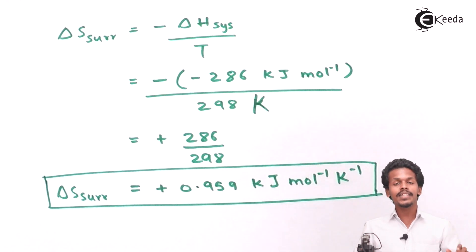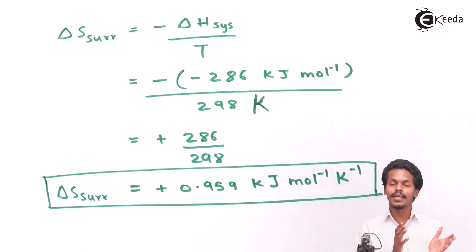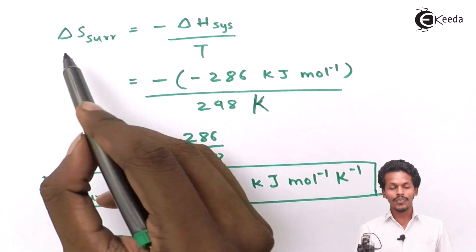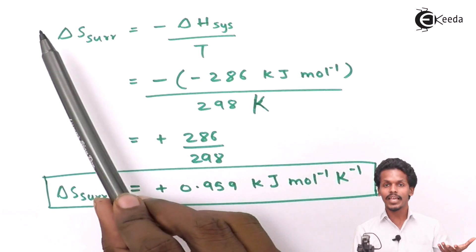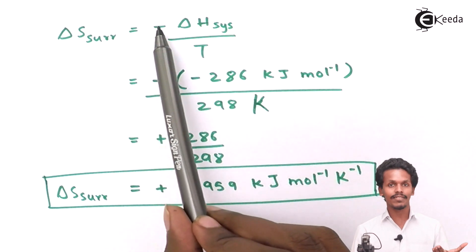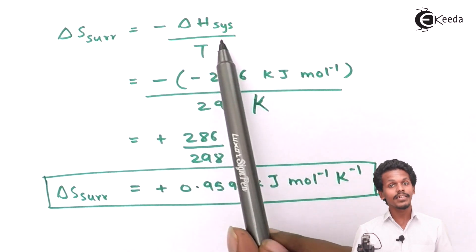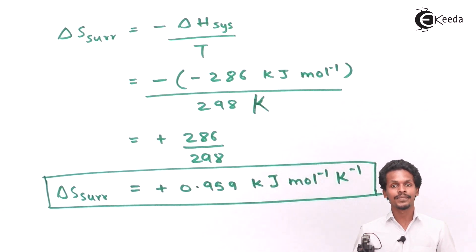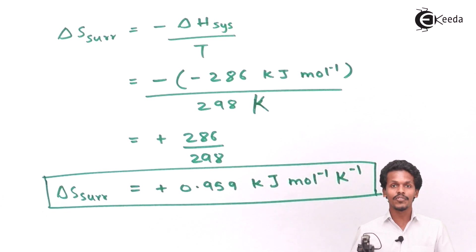That was easy to solve. The key point is that the entropy of the surroundings and the entropy of the system are related, but the sign is changed: ΔS_surrounding = −ΔH_system / T. Using this formula we can calculate the entropy change of a surrounding or a system. Thank you for watching — share this video with your friends and don't forget to subscribe to the channel.